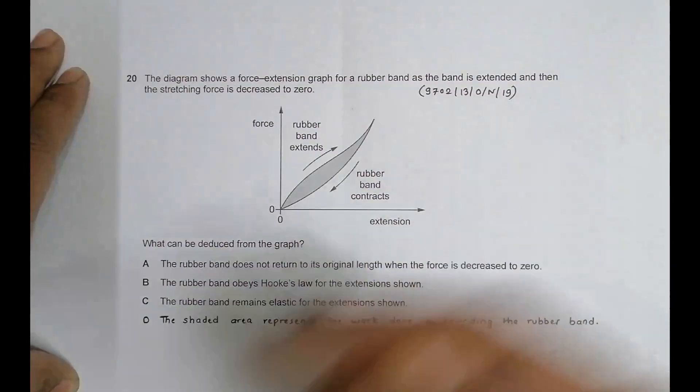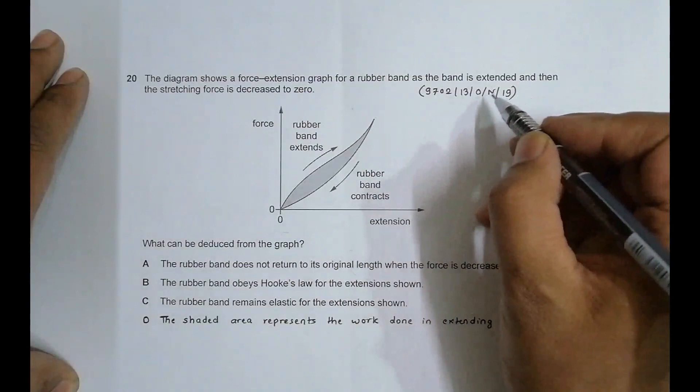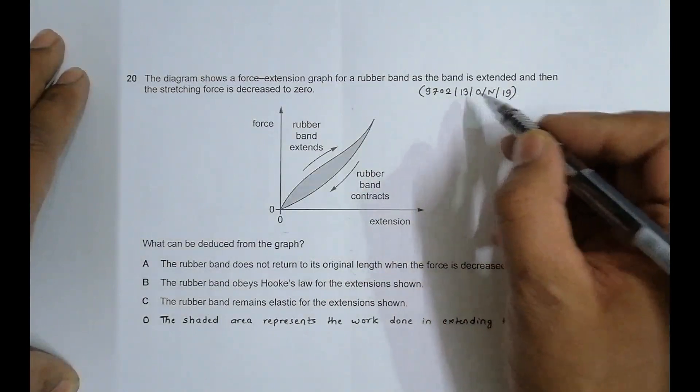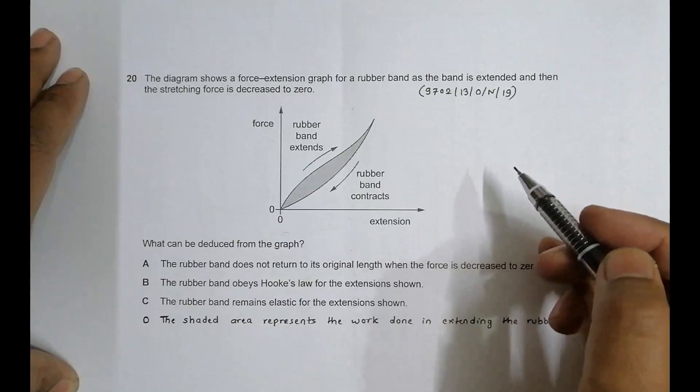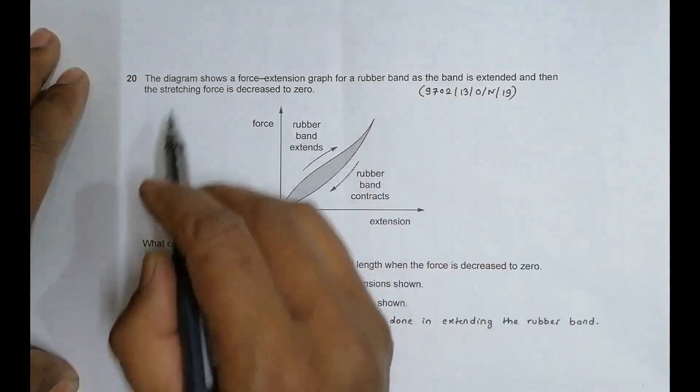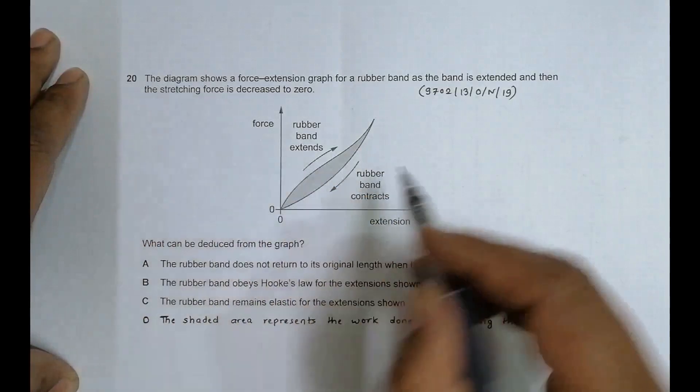Hello folks, this time the question is from 2019 October November paper 13, question number 20. The question is concerned with the chapter elastic properties of matter. It says that the diagram shows a force-extension graph for a rubber band.